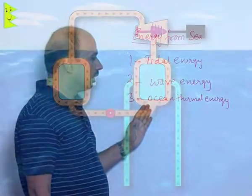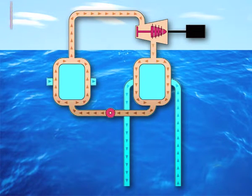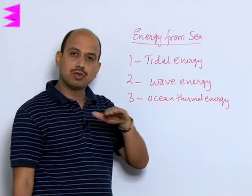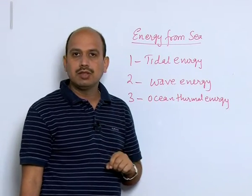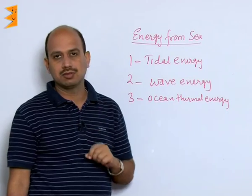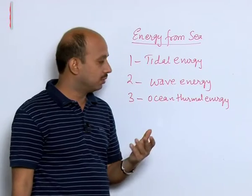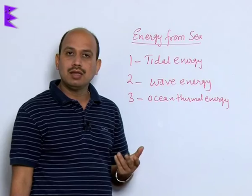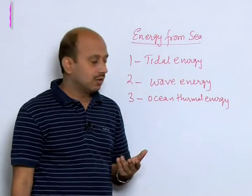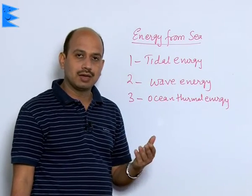Now, ocean thermal energy. This is due to the temperature difference between the surface of the sea water and the bottom of the sea water. When the sun's energy falls on the surface, it absorbs heat. If the depth of the sea is around 2 kilometers, we can get a temperature difference of 20 degrees Celsius. This temperature of the surface can be used to boil a volatile liquid like ammonia, and the ammonia vapors can be used to run a turbine to generate electricity.